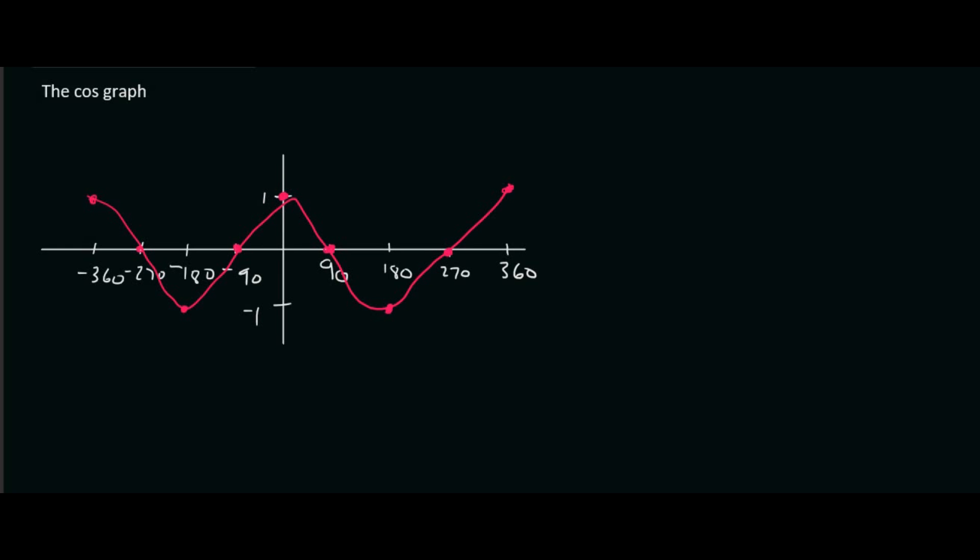So a cos graph looks very similar to a sin graph. I'm going to quickly put the sin graph that we had in our previous lesson. I'm going to draw that on top of this one. So it's something like that. Okay, so you can see that the sin graph and the cos graph are pretty much the same thing. They just start at different positions.